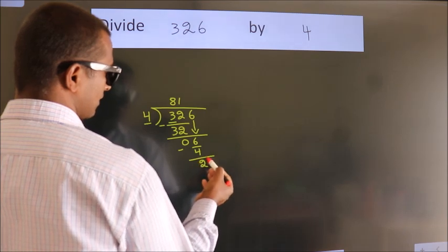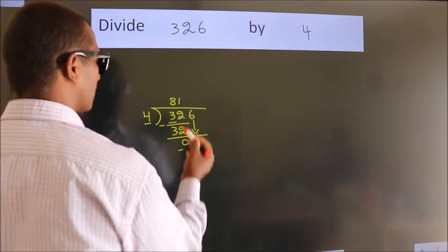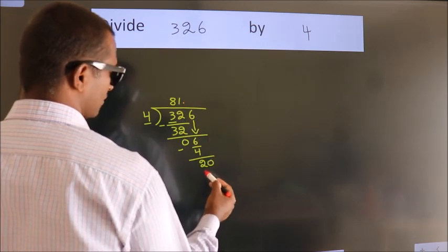After this, no more numbers to bring it down. So what we do is we put dot take 0. So 20.